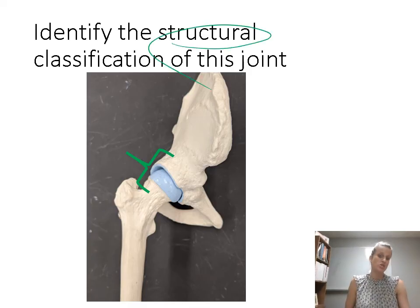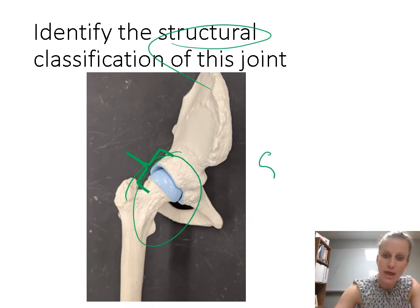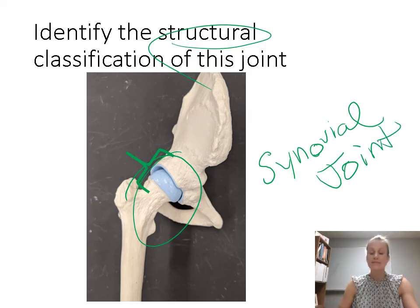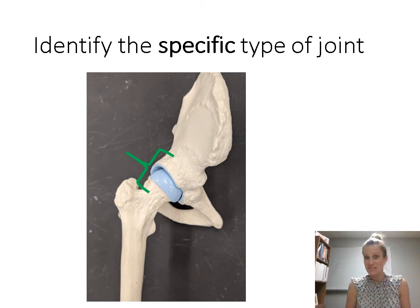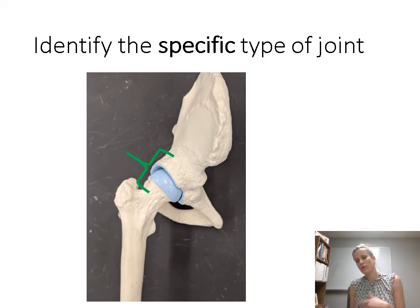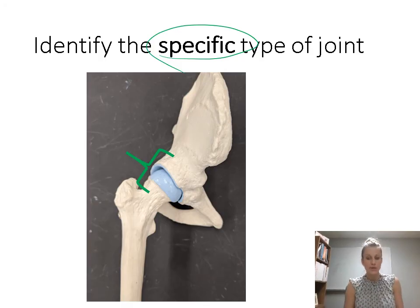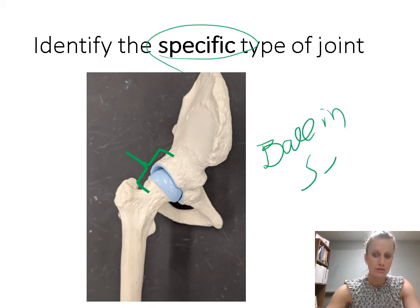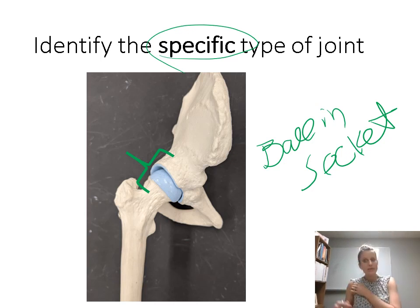Identify the structural classification of this joint. Structurally, the hip joint is referred to as a synovial joint. The lab also covered specific types of synovial joints. If a question asks you for the specific type of joint — don't say diarthrosis or synovial — say the specific kind. The hip joint is a ball and socket joint. The shoulder is another example of a ball and socket joint — a ball in a deep socket.